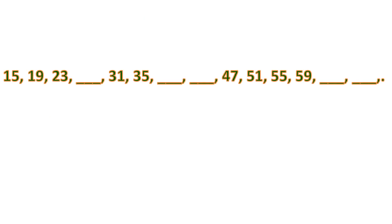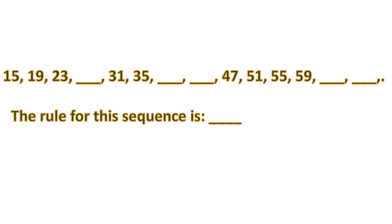Now we have some numbers — a sequence where some parts are blank — and we need to find the pattern first. To identify the rule, we look at the first two numbers: 15 and 19. This might be plus 4, because 15 plus 4 is 19. We confirm it with the next pair: 19 plus 4 is 23. So the rule for this sequence is plus 4.